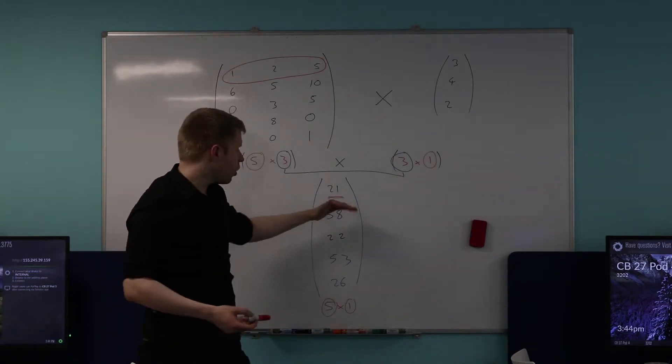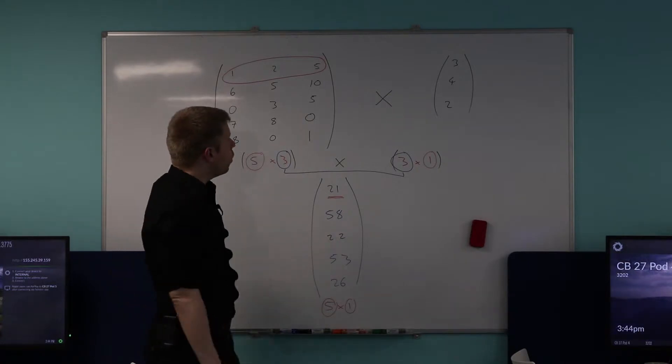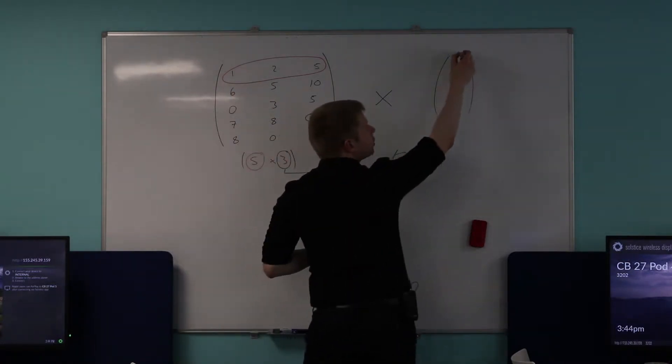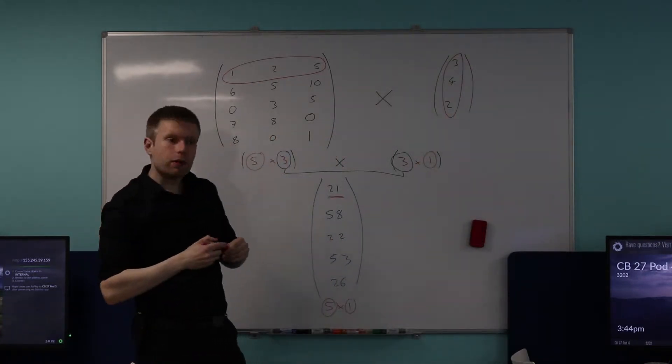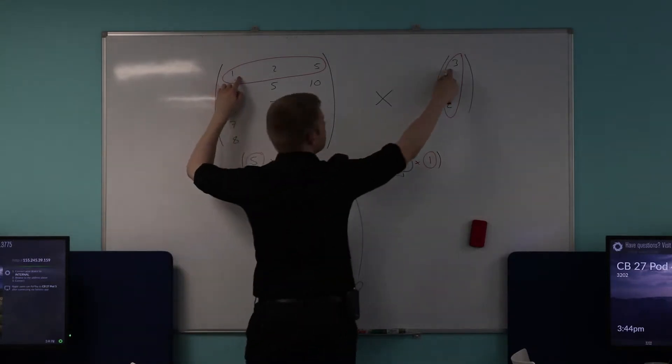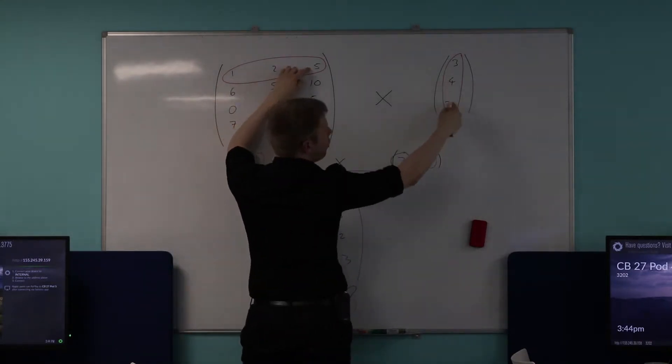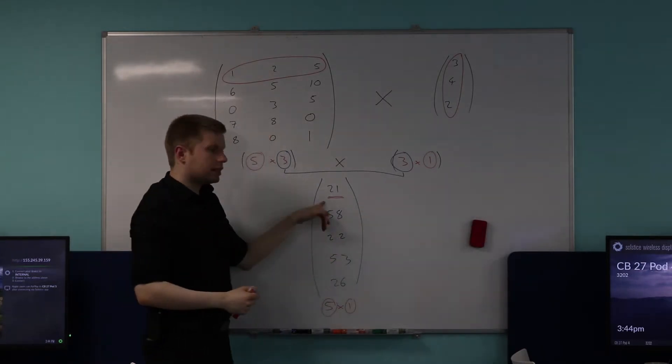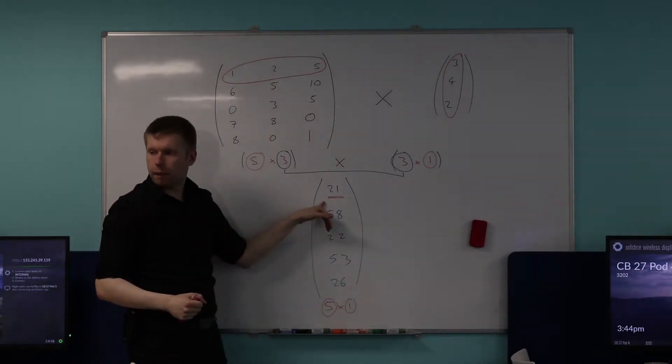Are you happy with that? The first row and the first column. Which means I need to use the first row of this matrix and the first column of this matrix, and then I multiply corresponding elements together. So first number with first number, second number with second number, third number with third number, and then add them to get this number here. Are you happy with that?